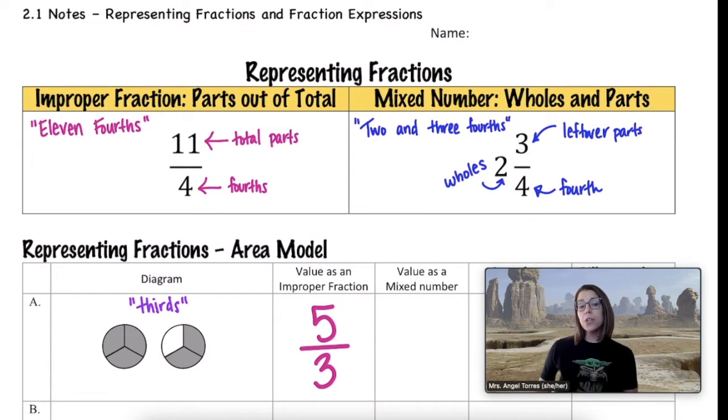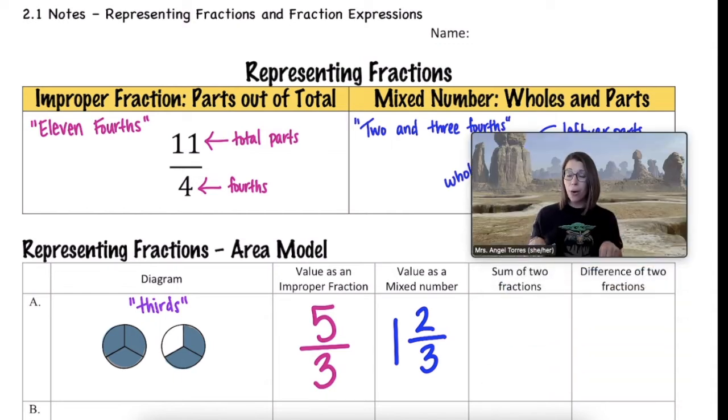Now for the mixed number, we have to go back to that diagram, and instead of counting the total number of parts, we want to start with how many holes are filled in. So here we have three out of the three thirds filled in. That means that's one hole. But notice in the second part, only two out of the three are filled in. That's going to be your leftover fraction. So all in all, we have one hole filled in, and only two thirds remaining in that second piece.